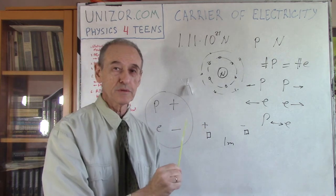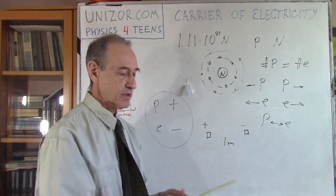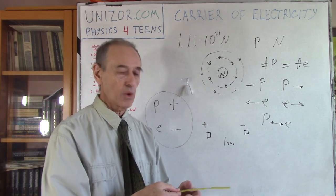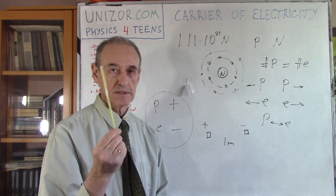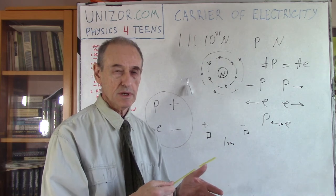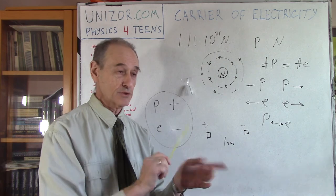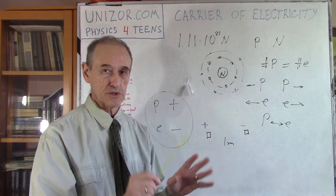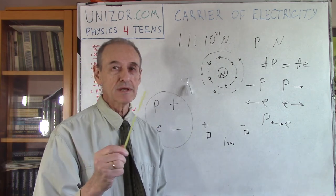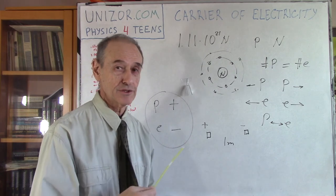It was not moving before, now it's moving. Why? Because when I was rubbing the cloth against the plastic, a certain number of electrons transferred from one to another. I don't know from which to which — it doesn't really matter. But now the plastic becomes a little bit charged.